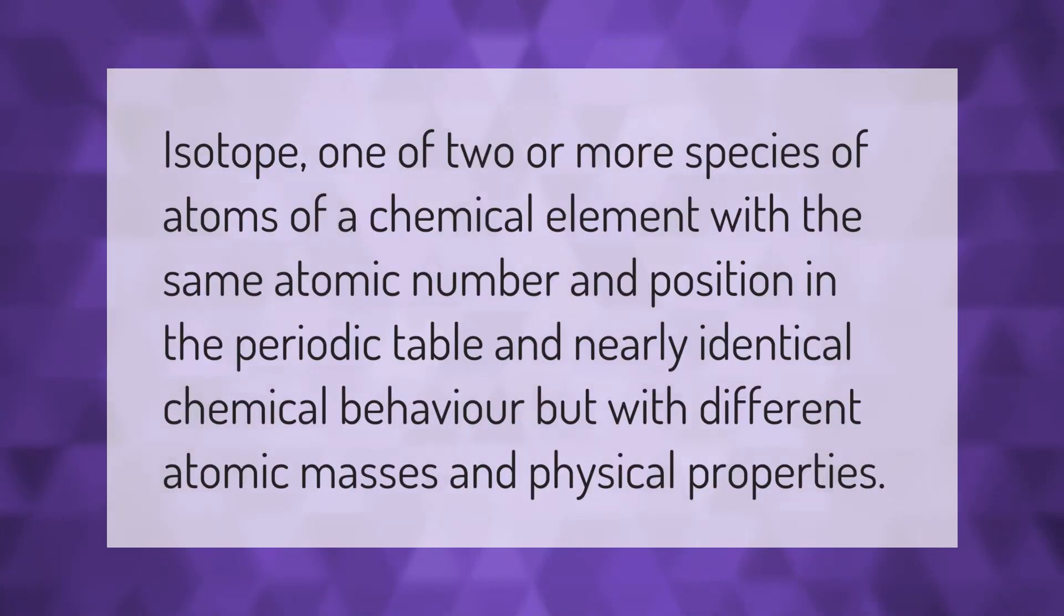An isotope is one of two or more species of atoms of a chemical element with the same atomic number and position in the periodic table and nearly identical chemical behavior, but with different atomic masses and physical properties.